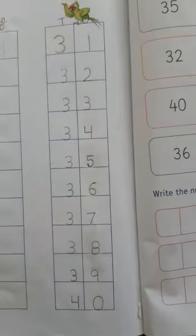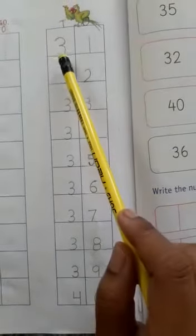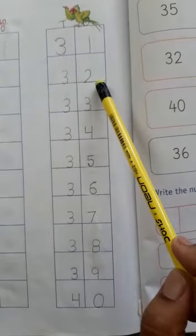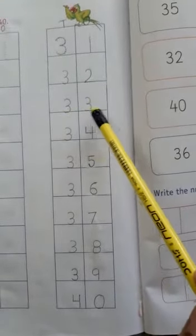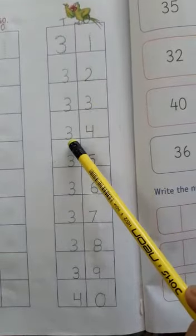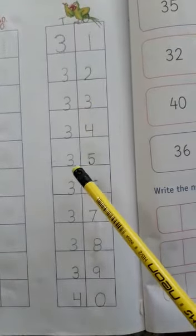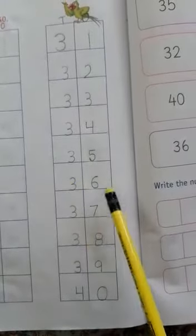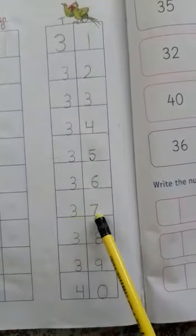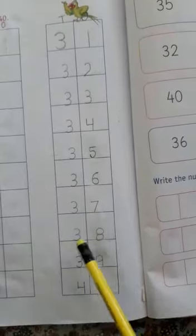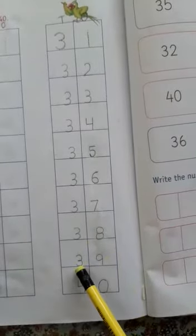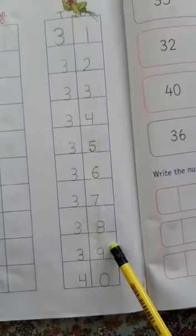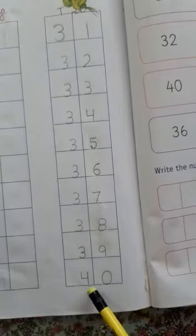Now let's count 31 to 40. 30 and 1, 31. 30 and 2, 32. 30 and 3, 33. 30 and 4, 34. 30 and 5, 35. 30 and 6, 36. 30 and 7, 37. 30 and 8, 38. 30 and 9, 39. And what comes after 39? 40.